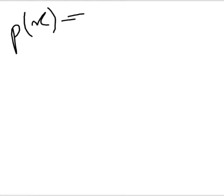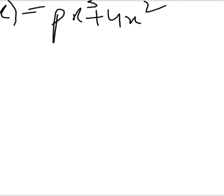I'll explain as we go — don't worry. First, write the given data. We have two polynomials given to us. For the first case, we take the first p(x): x³ + 4x² +...